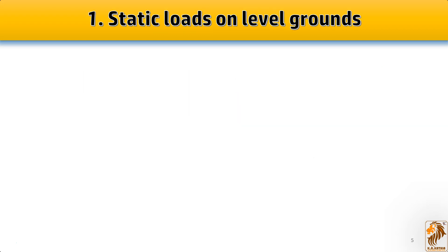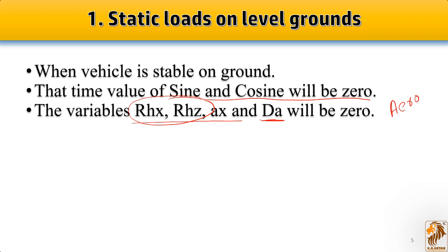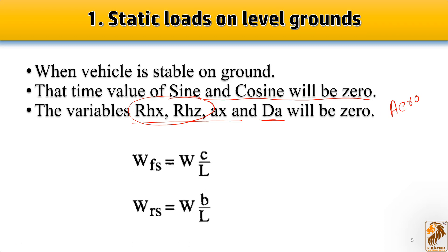For the first condition — static load on level ground — the vehicle is stable, so the sine and cosine slope components are zero. The hitch forces Rhx and Rhz are zero, and the aerodynamic force Da is also zero. The ultimate conclusion gives: Wf = W × c/L and Wr = W × p/L.